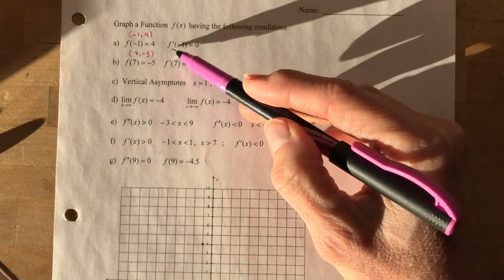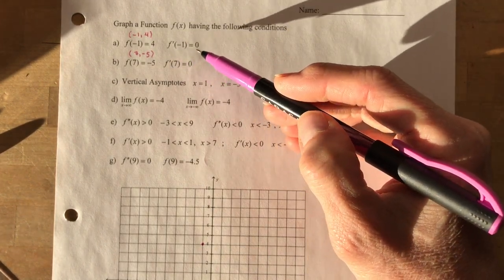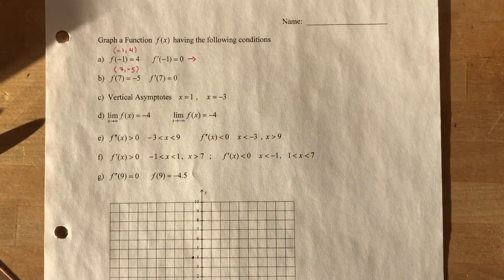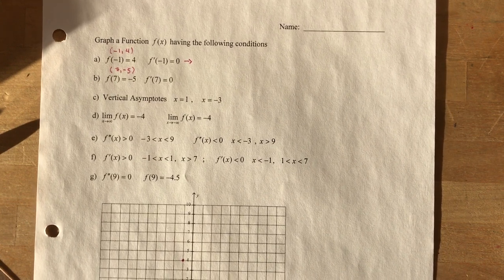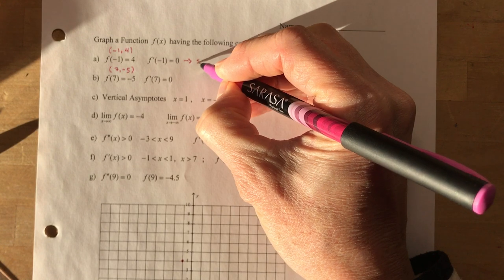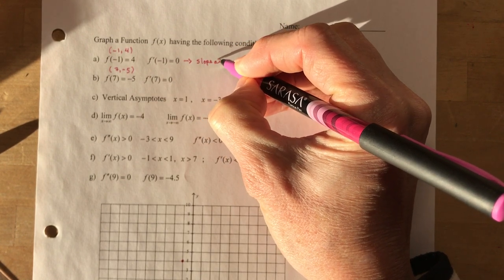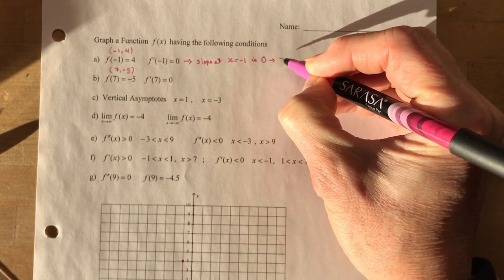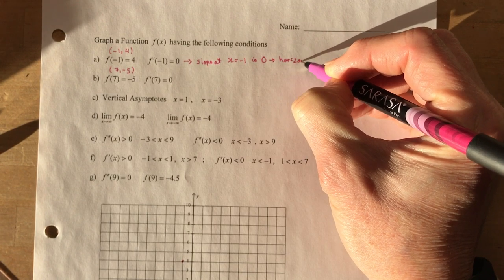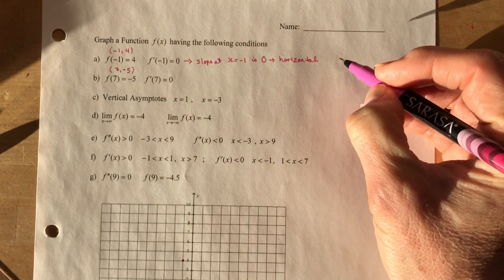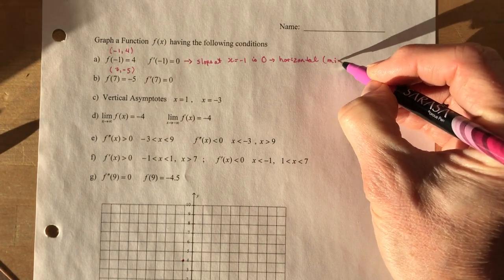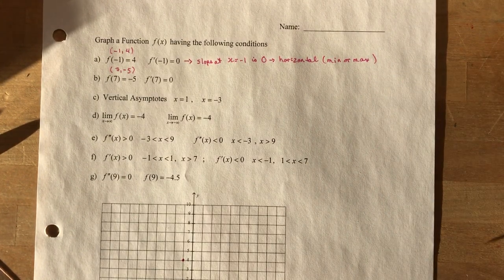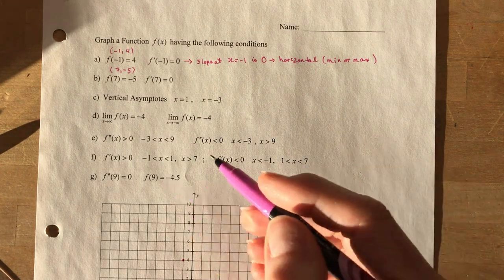It also says that f'(-1) = 0. Put these things into words and that will make your life much easier. If f'(-1) = 0, I'm saying that the slope at x = -1 is 0 — so it's a horizontal slope there. That also means you have a minimum or a maximum. I don't know yet which one it is, but it has horizontal slope there and I have to check further down.